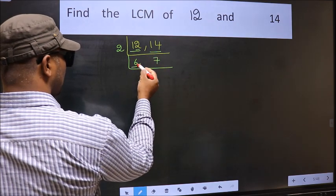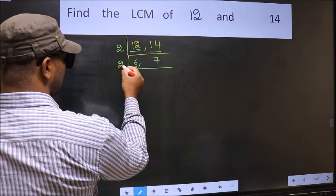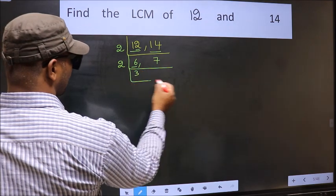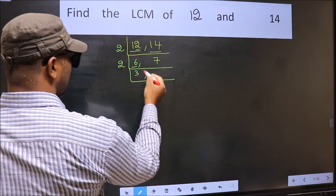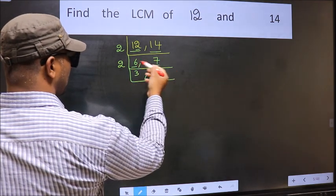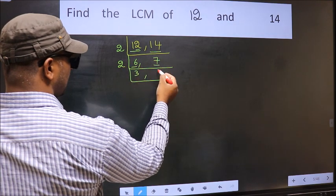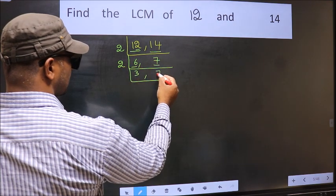Now here we have 6. 6 is 2, 3, 6. The other number 7 is not divisible by 2, so we write it down as it is.